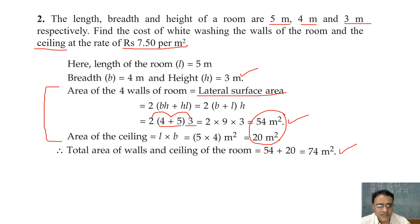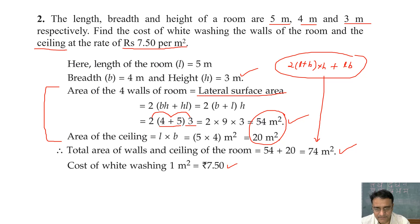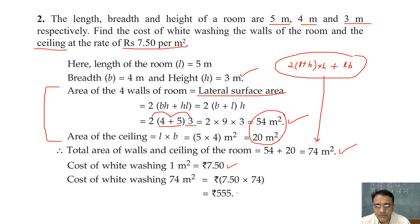You can also find this directly: area of walls and ceiling = LSA + area of top = 2(L + B)H + LB, which also gives 74 m². Total cost = 74 × 7.50 = ₹555.